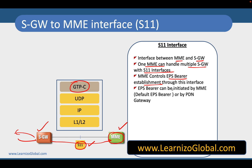EPS bearers can be initiated by the MME — which are typically referred to as default EPS bearers — or by the PDN Gateway, which can be some kind of dedicated bearers. Typically during the registration procedure we create a bearer, and that bearer is referred to as the default EPS bearer. That is the typical function of the GTP-C protocol, so that the MME can control the functionality of the SGW for control plane communication.